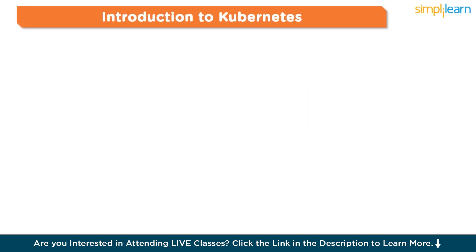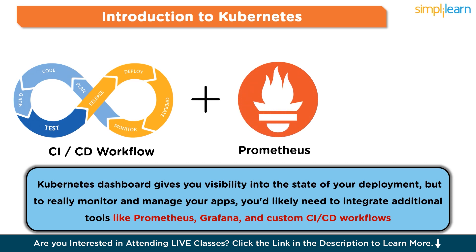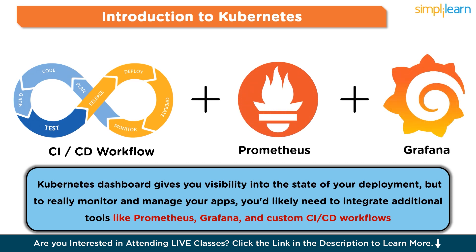Let me walk you through an example. Say you want to deploy your e-commerce web application on Kubernetes. First, you'd provision a Kubernetes cluster either on premises or on a cloud provider. Then you'd write the necessary YAML manifests to describe your app and apply those to the cluster. The Kubernetes dashboard gives you visibility into the state of your deployment, but to really monitor and manage your apps, you'd likely need to integrate additional tools like Prometheus, Grafana, and custom CI/CD workflows.